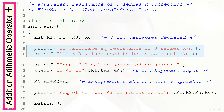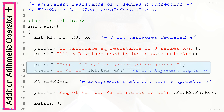Printf statements in lines 9 and 10 display necessary messages on the monitor to make the program user-friendly. The printf statement in line 12 displays a message about what type of resistance values are to be input through the keyboard. The scanf statement in line 13 receives the three integer inputs from the keyboard and stores them in the memory address locations of variables R1, R2, and R3 respectively.